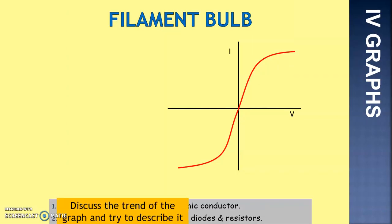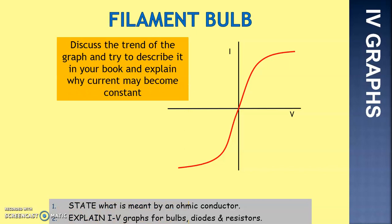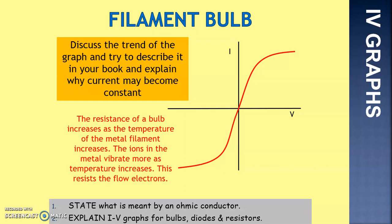What we can see here is what's called an IV graph — a current and voltage graph. The resistance of a bulb will increase as the temperature of the metal filament increases. The ions in the metal vibrate more as the temperature increases, and this resists the flow of electrons. At the start of the graph, when voltage and current are low, it is a straight line. But as voltage gets higher, the metal filament heats up and resistance changes. You need to recognise this pattern as a filament bulb.